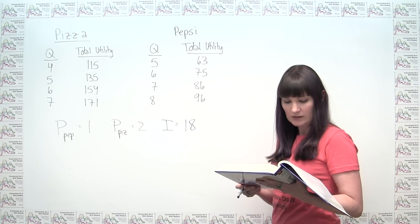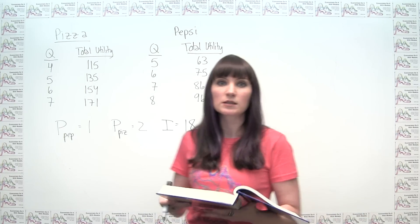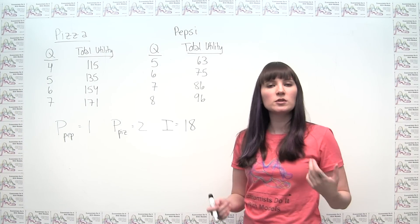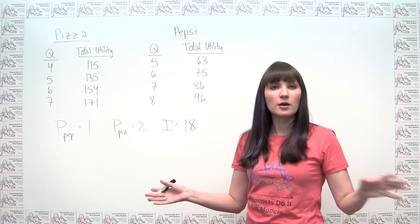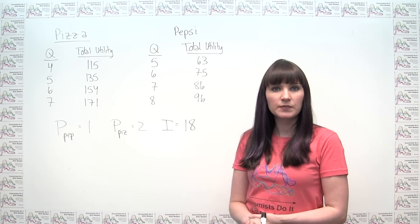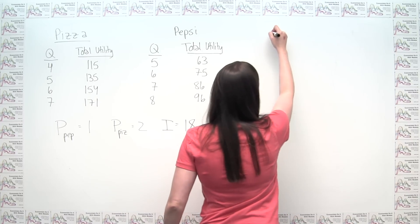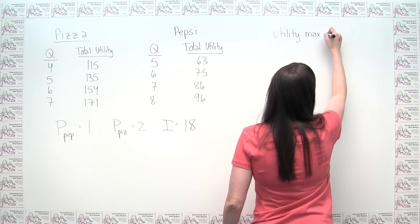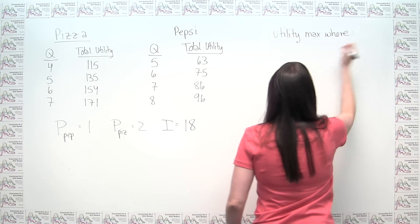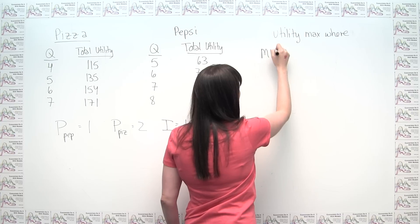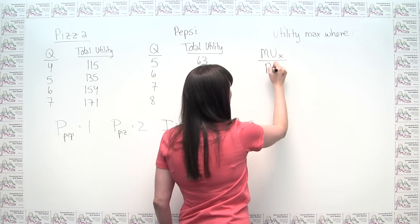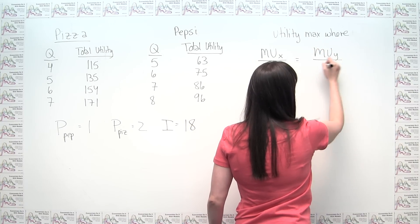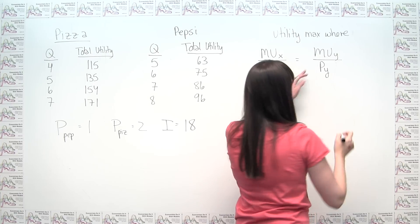The question asks: what combination of pizza and Pepsi will maximize her utility? Luckily, we have a pretty simple and straightforward rule that lets us know whether or not our utility is being maximized. Utility is maximized where the marginal utility of the first good divided by the price of the first good equals the marginal utility of the second good divided by the price of the second good.